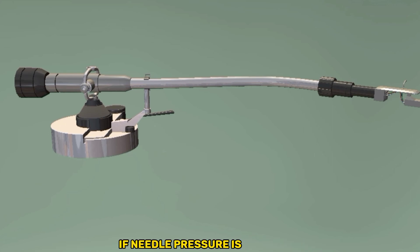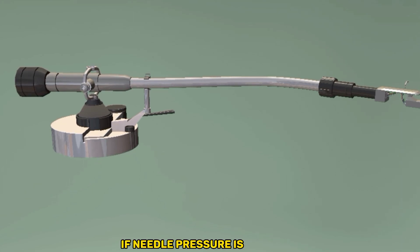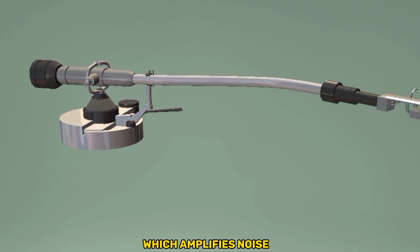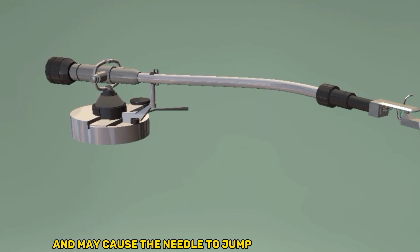If needle pressure is too high, high frequencies are less audible and record grooves wear out faster. If needle pressure is too low, high frequencies are louder, which amplifies noise and may cause the needle to jump out of the groove.